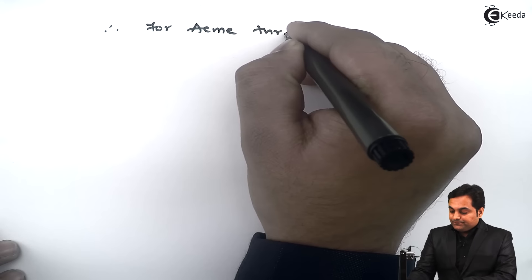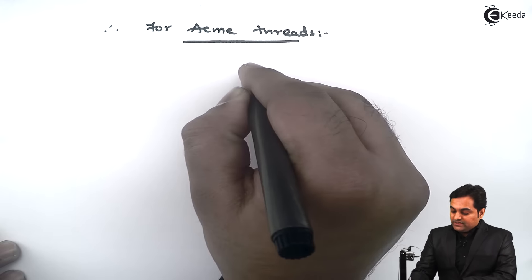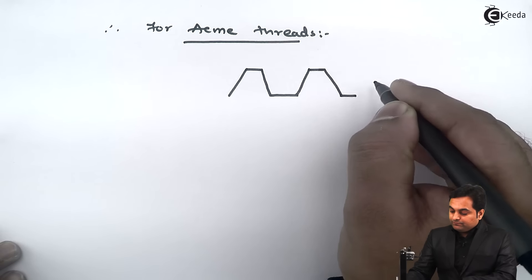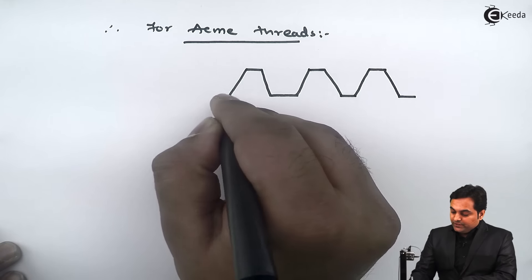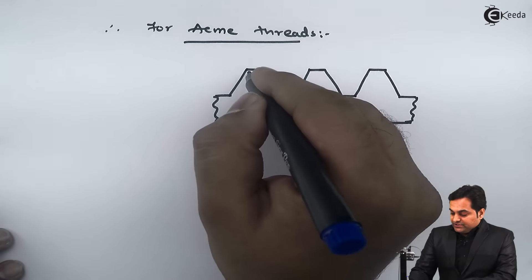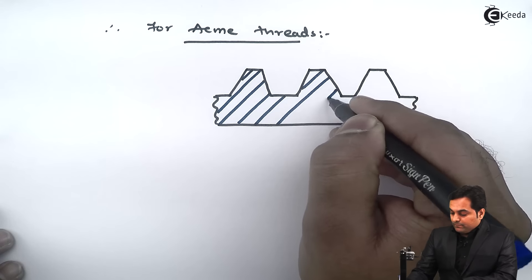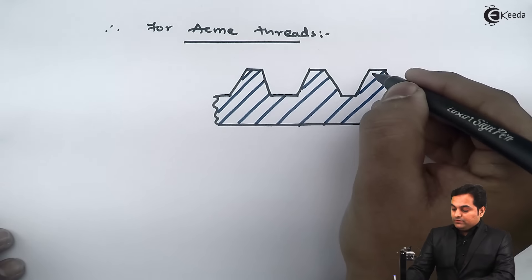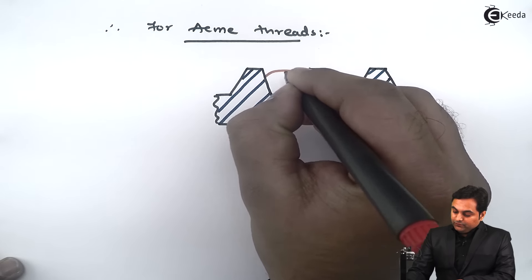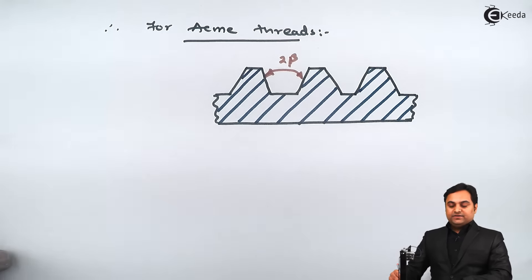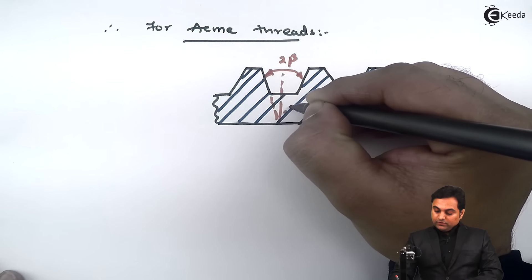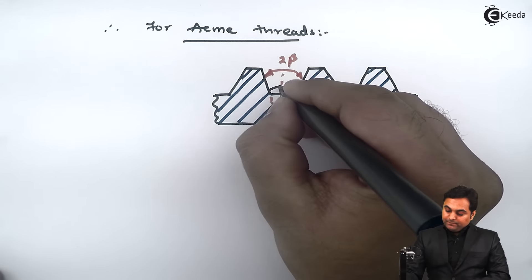As we know, if I draw the profile of the ACME thread, your ACME thread profile is in this way. This is the profile of the ACME thread. This included angle, it would be called as 2-beta. And suppose if I want to calculate the half of this, if I extend this, the half of this would be just beta.